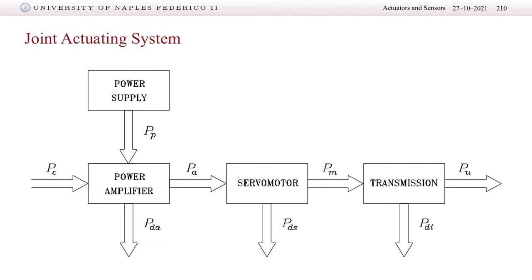We can start from the joint actuation system. A joint actuation system is composed of a number of subsystems that make up, from a physical point of view, a joint of a robot manipulator. In a manipulator we have M joints, and this block represents each one of them. Typically a joint actuation system is composed of a power supply — the kind depends on the nature of the joint. If the motor is electric, it's electrical power; if it's pneumatic or hydraulic, we have a different kind of power supply system.